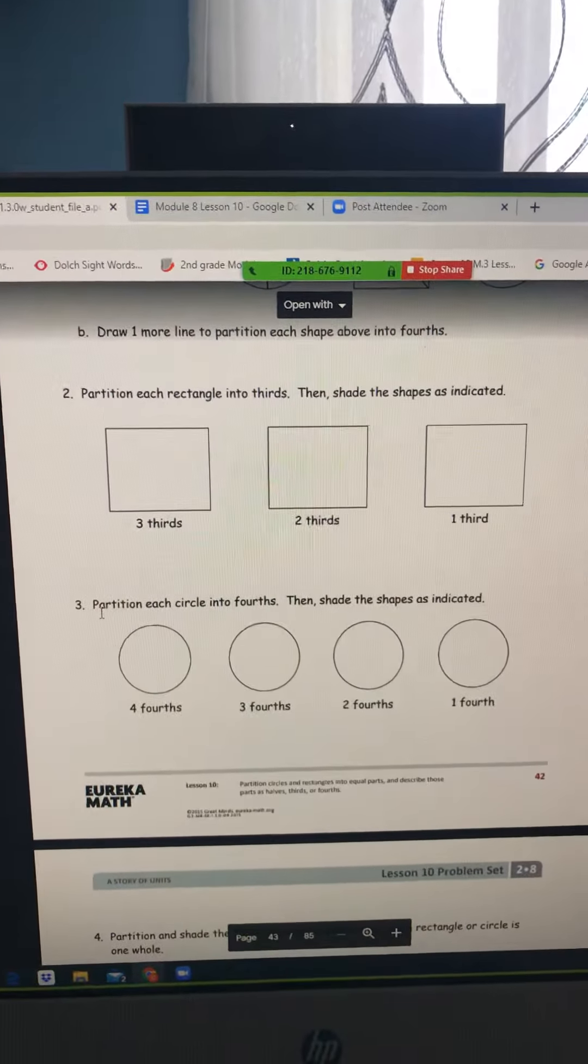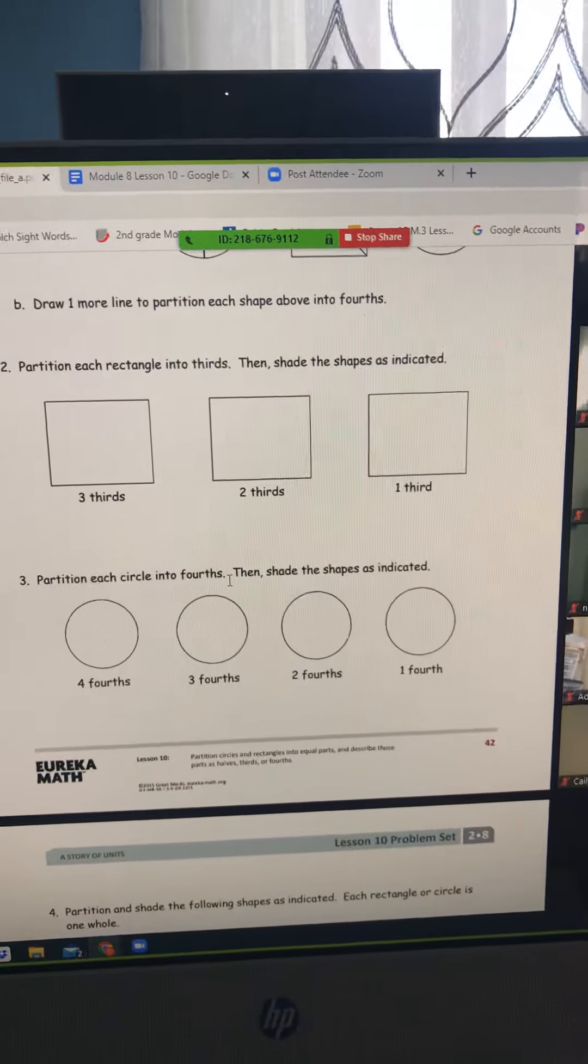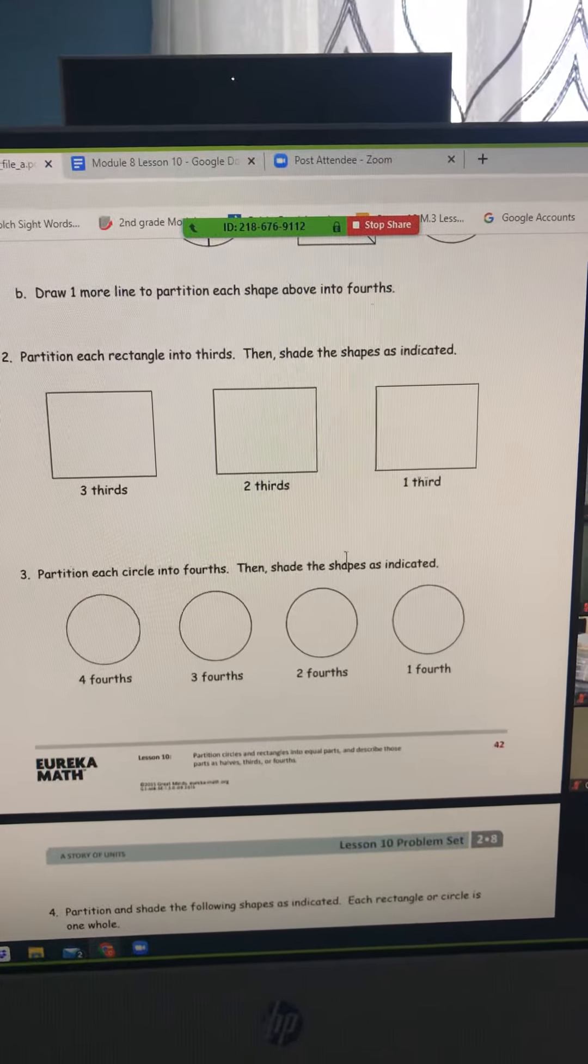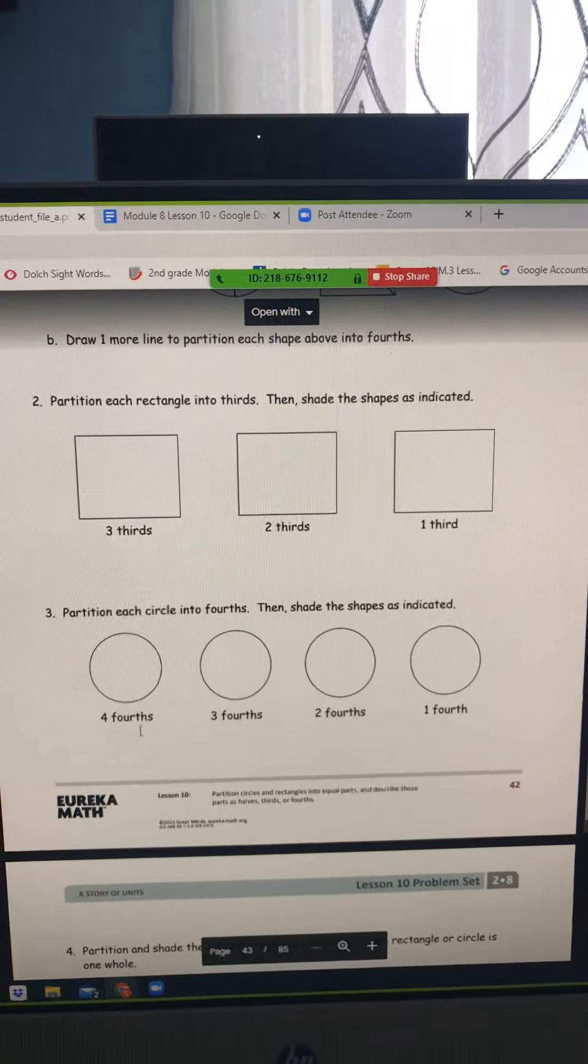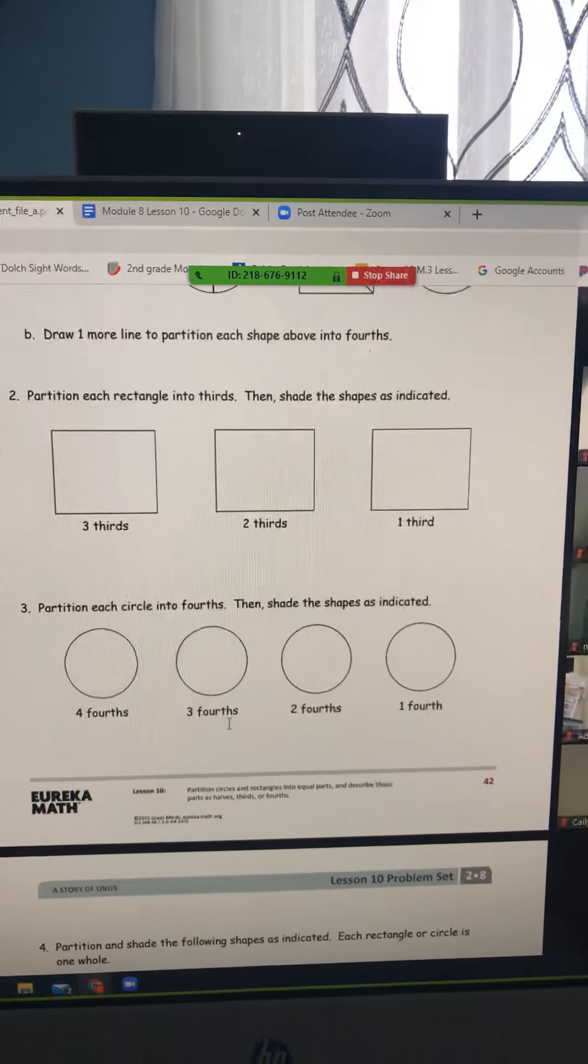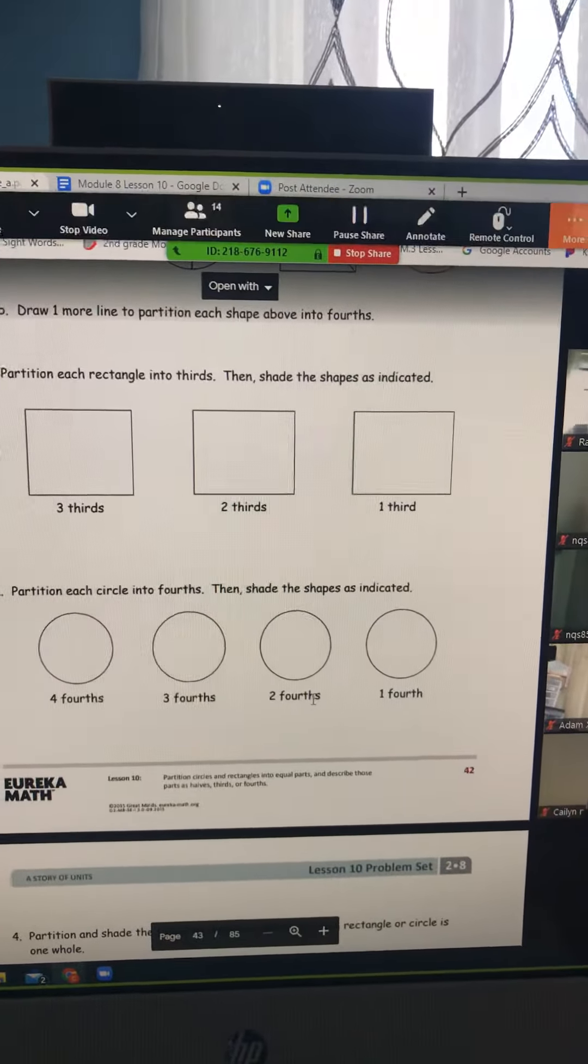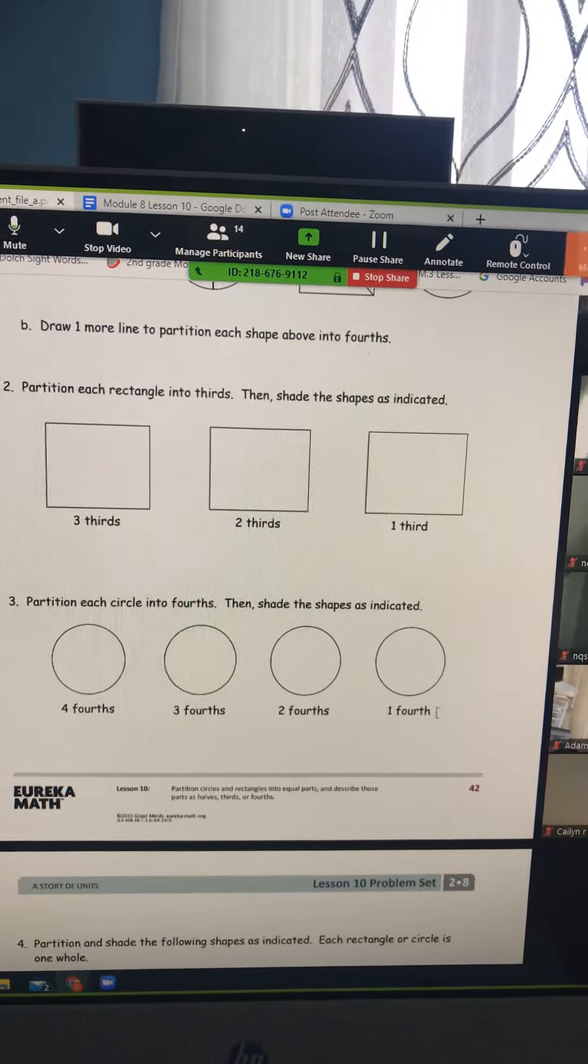Question three. Partition each circle into fourths, then shade in the shades indicated. Shade in four fourths, shade in three fourths, shade in two fourths, shade in one fourth.